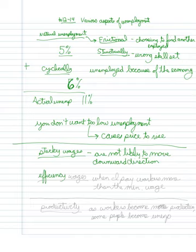Also, unemployment can be caused by efficiency wages. Efficiency wages are when I pay my workers more than the minimum wage.